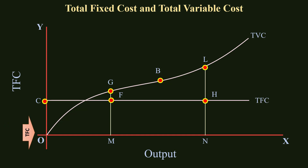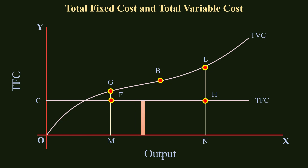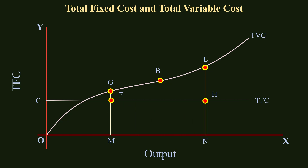Total Fixed Cost at zero output is OC. Total Fixed Cost at outputs M and N are MF and NH respectively. OC, MF, and NH are equal to one another. Hence, the Total Fixed Cost Curve is parallel to the X-axis.